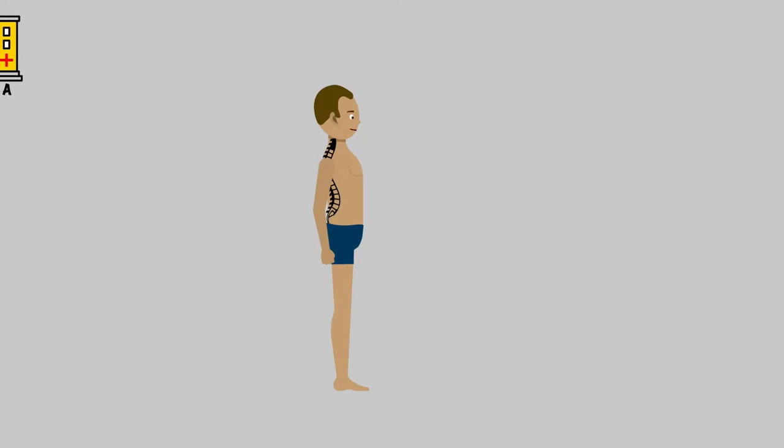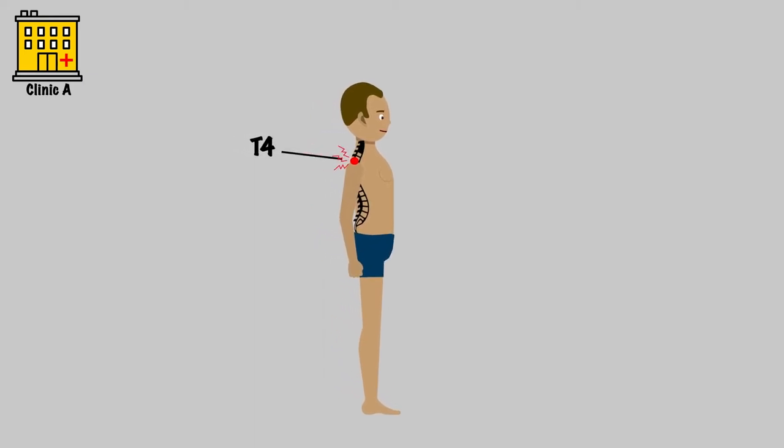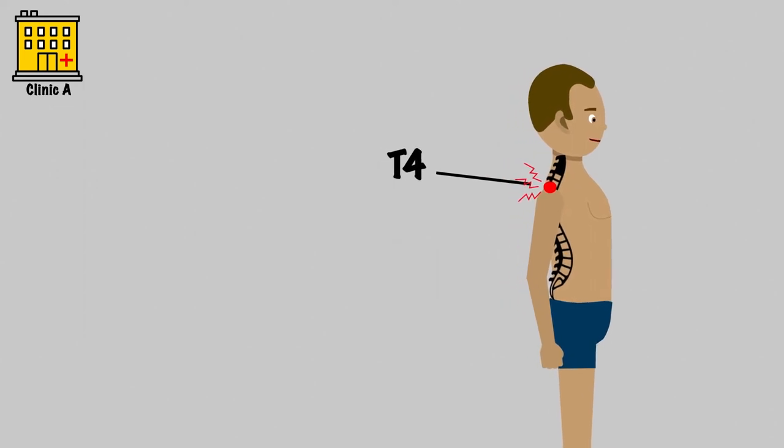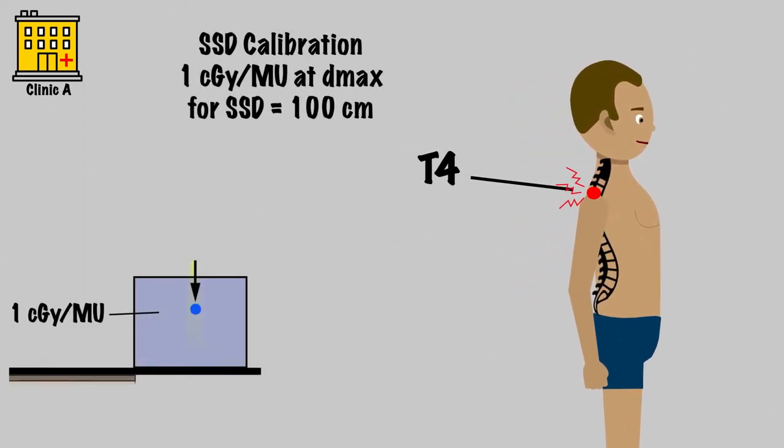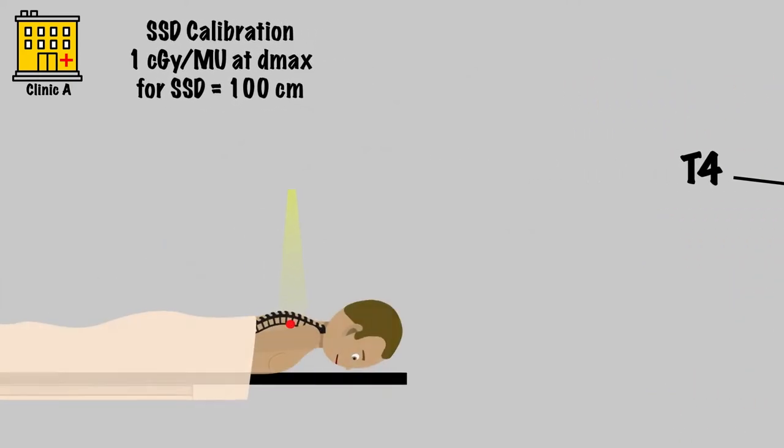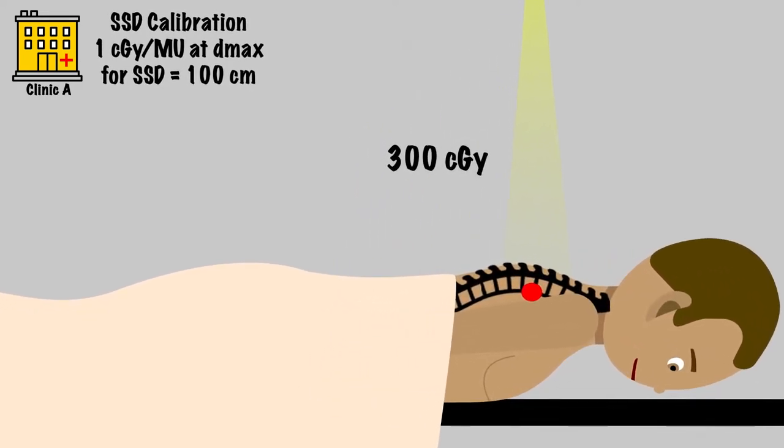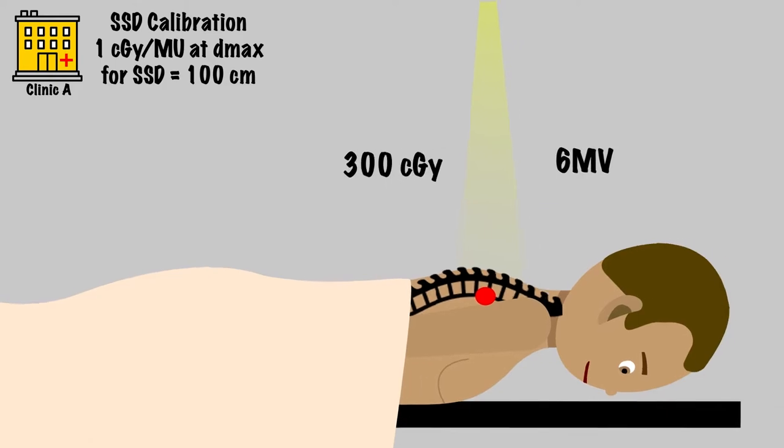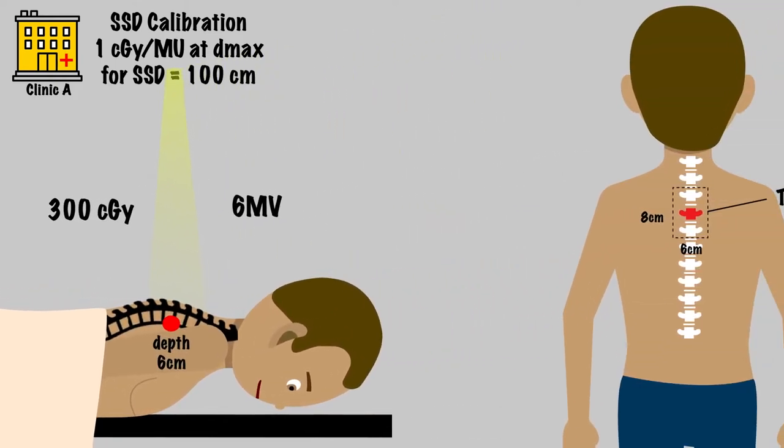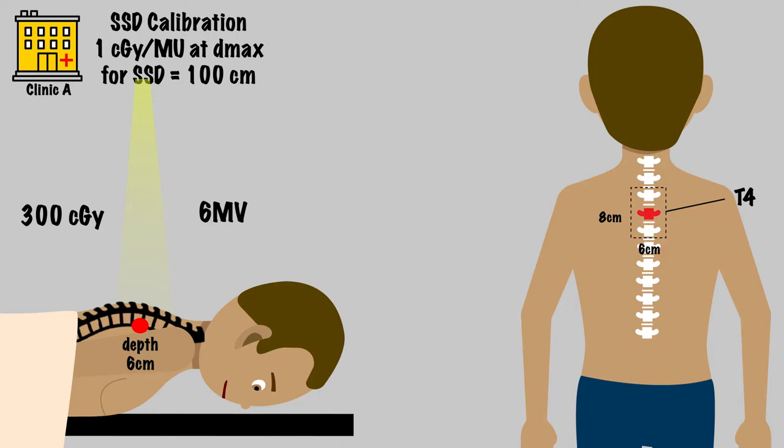Now let's consider examples of urgent weekend treatment setups and hand calculations. Say you're consulted on a patient with cord compression at T4, needing emergent treatment. This particular clinic has calibrated their machines to deliver 1 centigrade per monitor unit at Dmax with SSD setups. You've set up the patient and decided on a dose of 300 centigrade per fraction with a single PA field and an energy of 6mV and a 100 centimeter SSD setup with a target depth of 6 centimeters. You're planning to treat one vertebra above and below T4, making your field size 6 by 8 centimeters. How many MU are required to deliver the intended dose to your target?